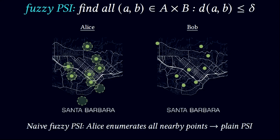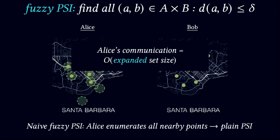One naive way to solve this fuzzy PSI problem is to redefine Alice's set as all the points contained within a delta radius ball around all its GPS coordinates, and then essentially run plain PSI between Bob's points and Alice's expanded set. Traditional PSI protocols have communication complexity proportional to each party's set size, so in this case Alice's communication would be proportional to the expanded set size, which would be the union of delta radius balls.